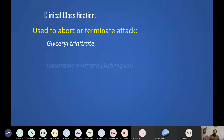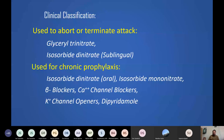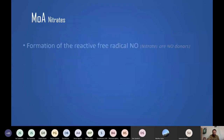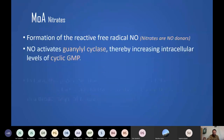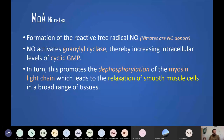To recap the classification: to abort an acute attack, we use glyceryl trinitrate (nitroglycerin) and isosorbide dinitrate sublingually. Other nitrates given orally are for prophylaxis. Now, to understand the mechanism of action, let me remind you of something from a previous semester regarding acetylcholine.